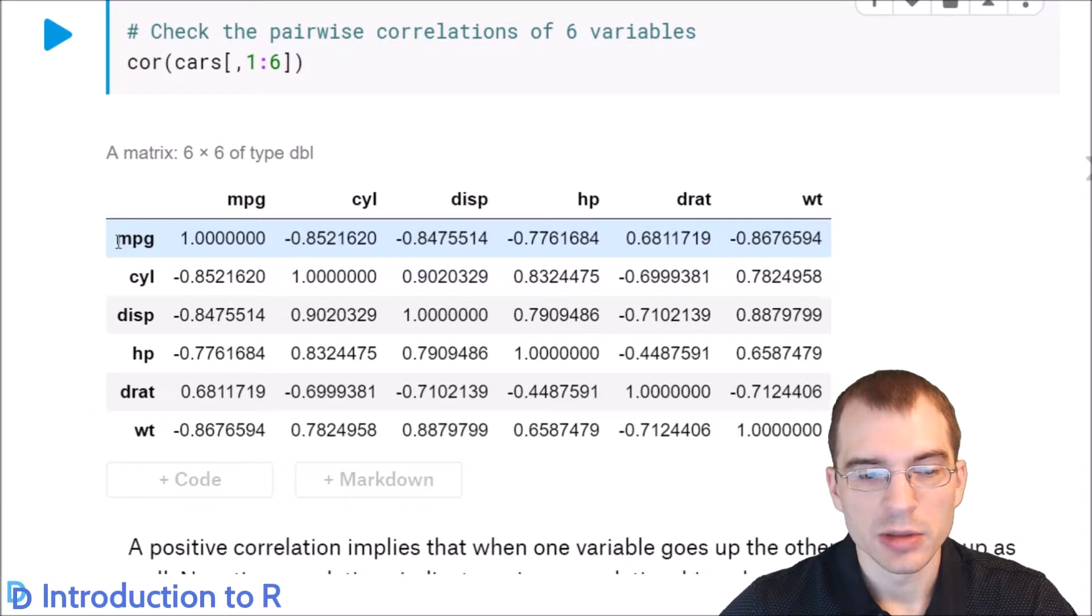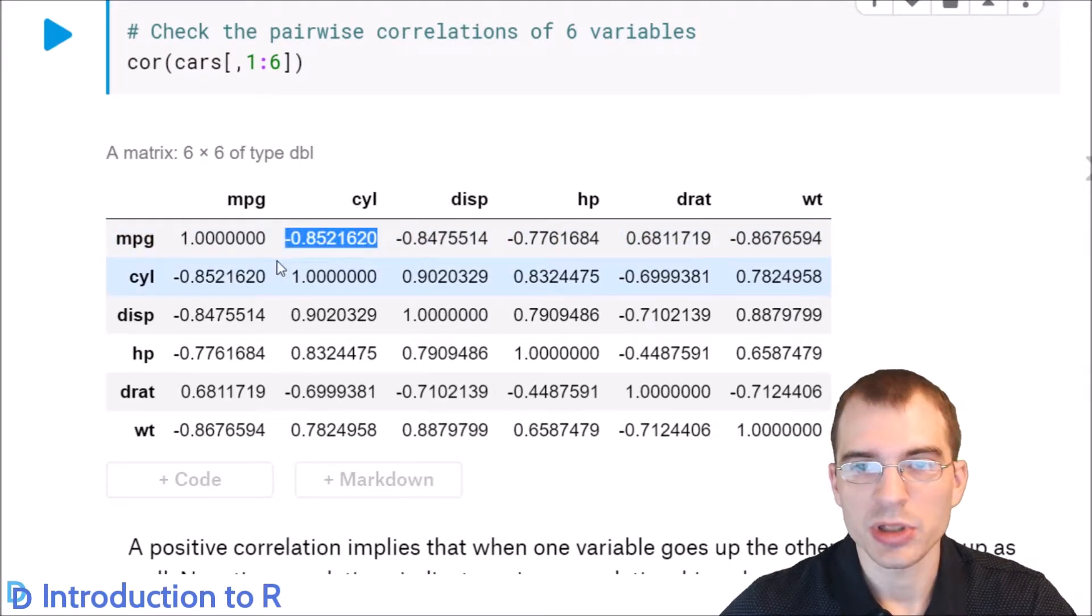For instance, miles per gallon are negatively correlated at a pretty high strength, 0.85, which is on a scale of negative 1 to 1. Negative 0.85 means miles per gallon is highly negatively correlated with cylinders. So the more cylinders a car has, it tends to get worse miles per gallon. That's pretty intuitive with what we know about how cars work.